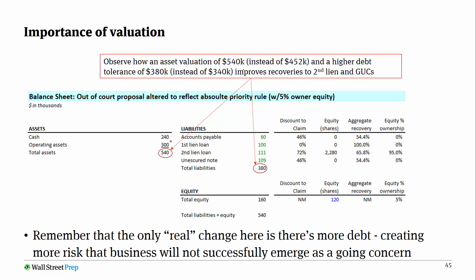Observe in our case how, instead of an asset valuation of $452, if we believe the business is worth $540, you may be inclined to have a higher tolerance for debt. So you might say the max debt threshold shouldn't be $340 — it should be $380. Now look at what that does to the second lien recoveries.